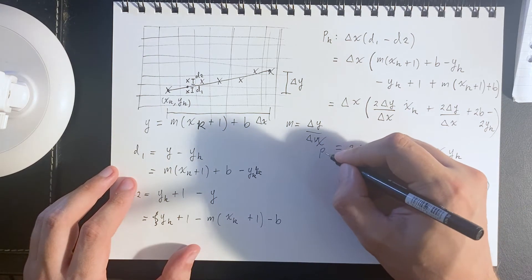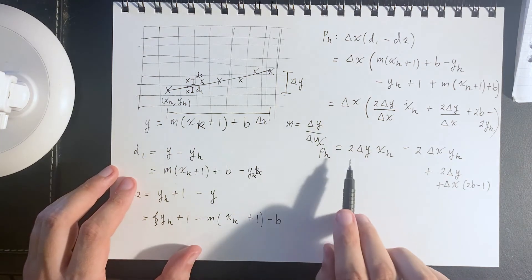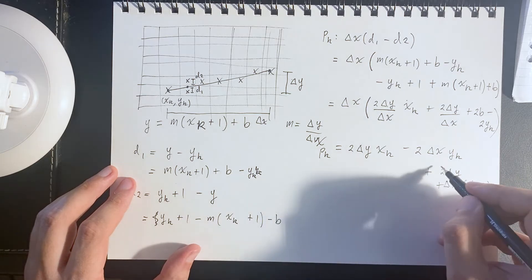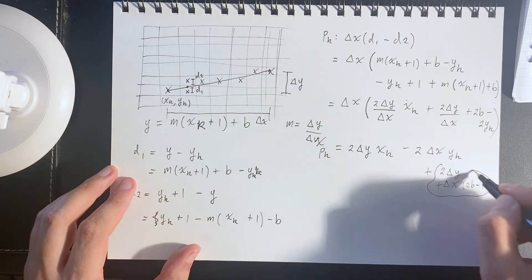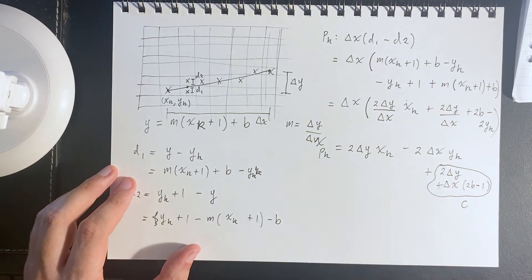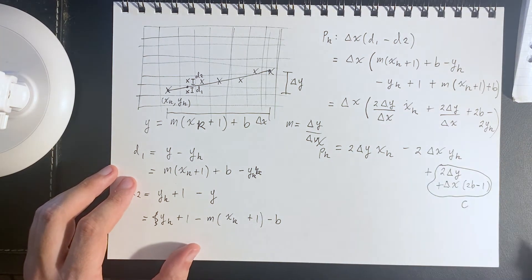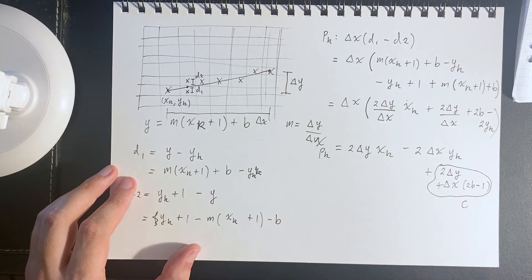This decision parameter p_k is equal to these terms here, and note that only the first two terms depend on k, so we can treat this last term as a constant term. We can eliminate that constant term by turning this into a recursive formula.